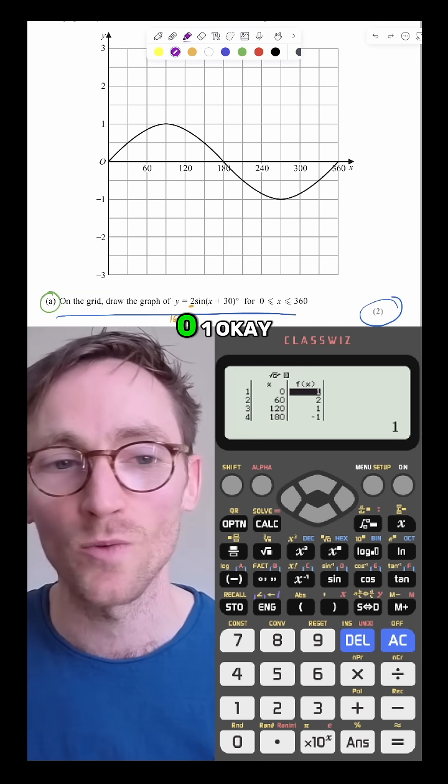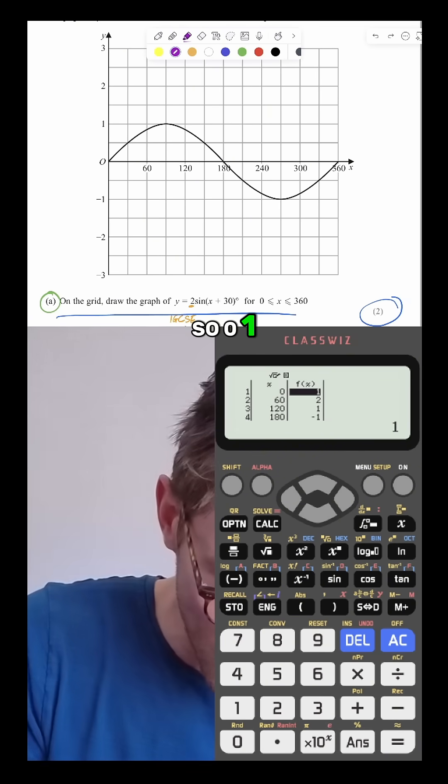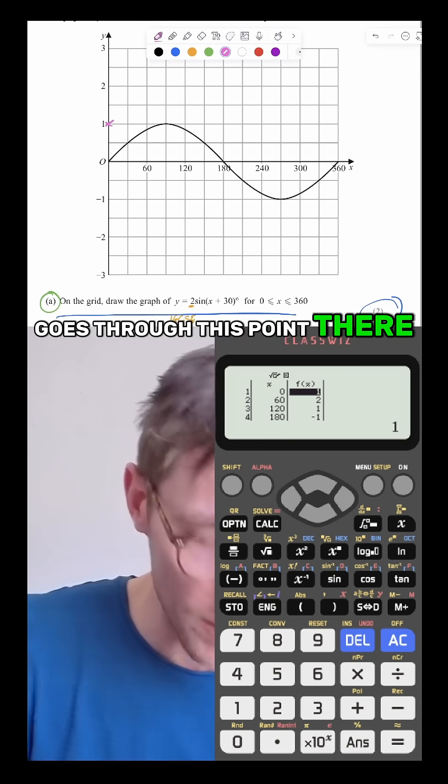Crazy hack here. 0, 1. Okay, so 0, 1. So that means the graph goes through this point there, 0, 1.